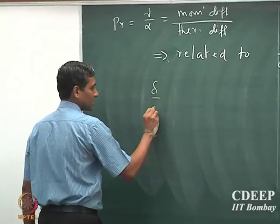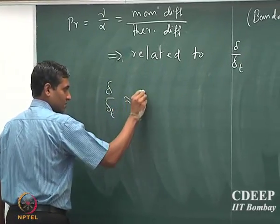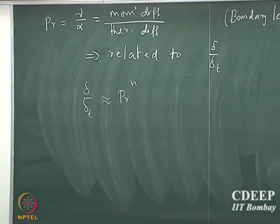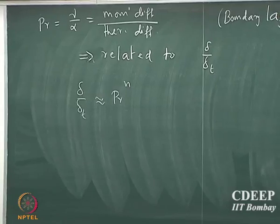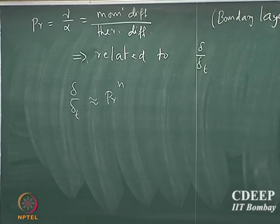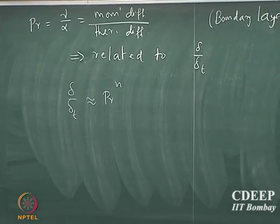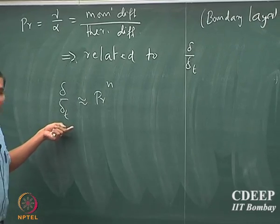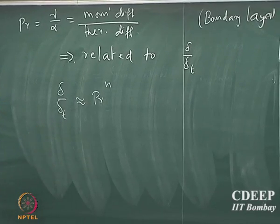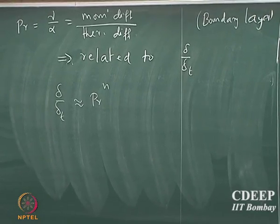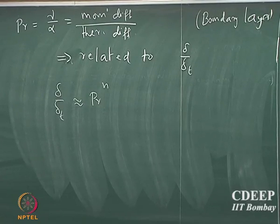So this is the general functional form. We do not know what that n is till now. We are going to figure that out while we discuss different aspects of convection. It is safe to assume that the ratio of the momentum boundary layer to the thermal boundary layer thickness scales as Prandtl number to the power of n. We still do not know what that n is.